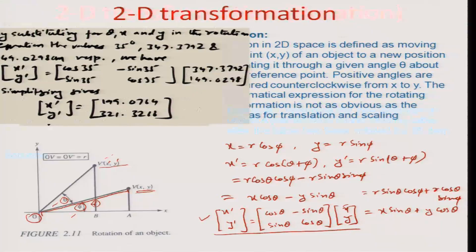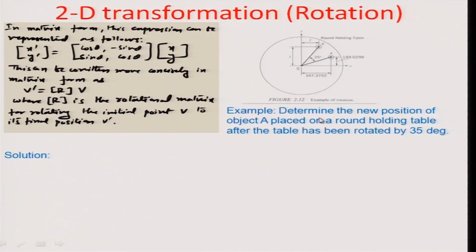Let us now apply this to a practical problem. You can see that in this particular problem there is a radius OA and the location coordinates of this point A are 347.3792 comma 149.0298. The final coordinates have to be found out of A dash provided you have rotated A to A dash through an angle of 35 degrees anti-clockwise, and we need to calculate the x prime y prime using the same formulation.